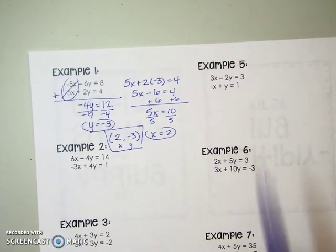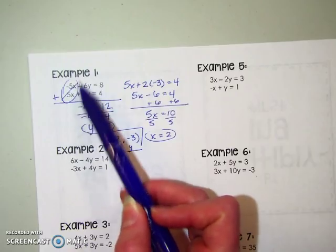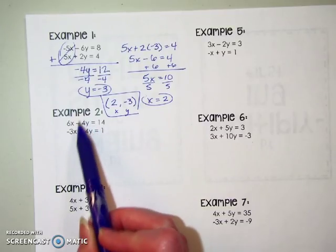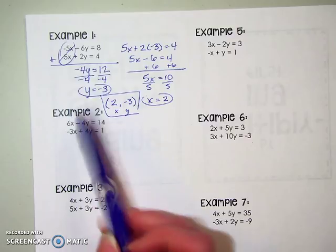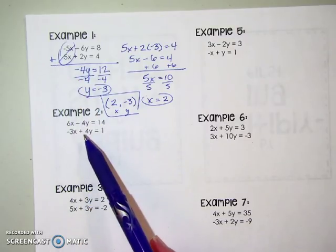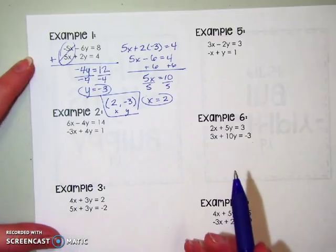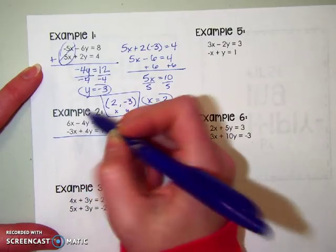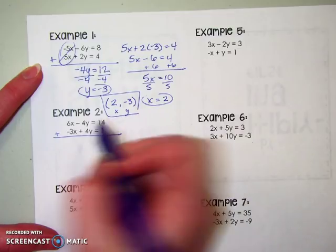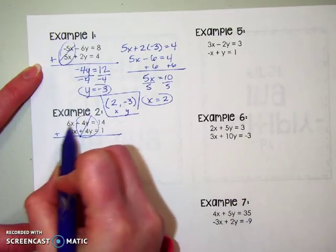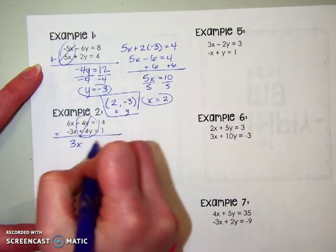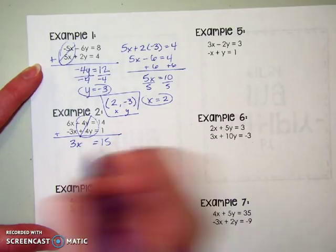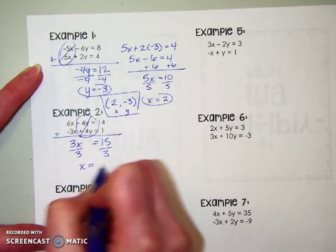This method works by using a zero pair. Sometimes there's already a zero pair — like in this example, there's already a zero pair with the Y's. We can eliminate X's or Y's; we're just trying to find the easiest way to get a zero pair. So we combine the two equations: 6X minus 3X is 3X, with an equal sign, and 14 plus 1 is 15. Dividing by 3 gives X equals 5.